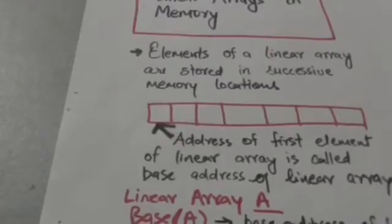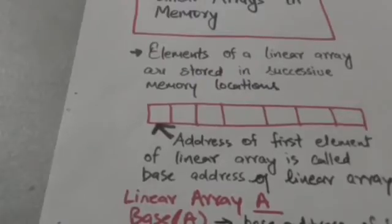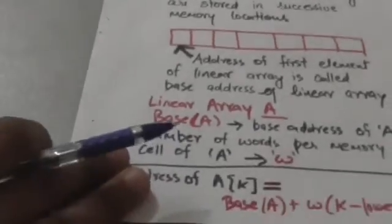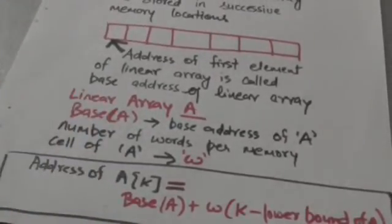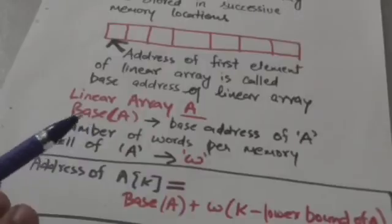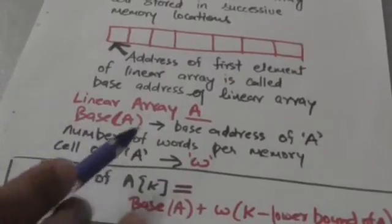Now suppose there is a linear array A whose base address is Base(A), and the number of words per memory cell of the linear array A is w.